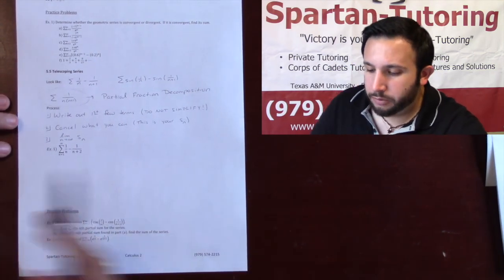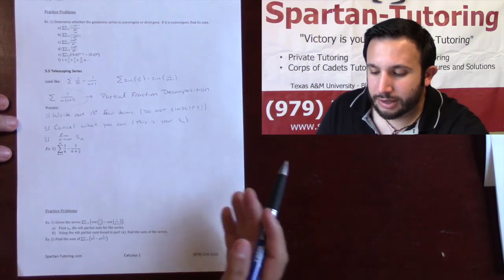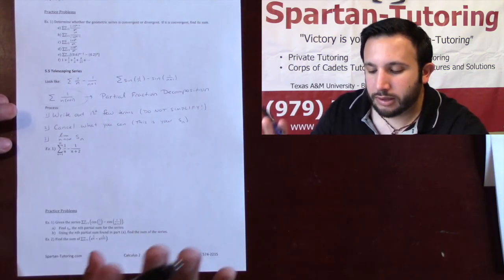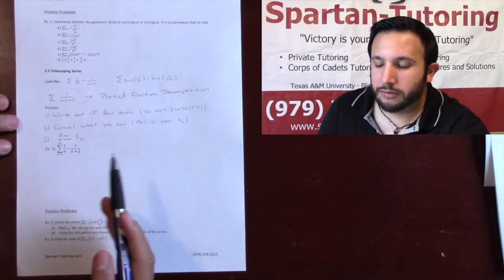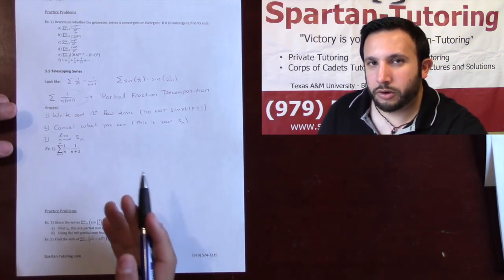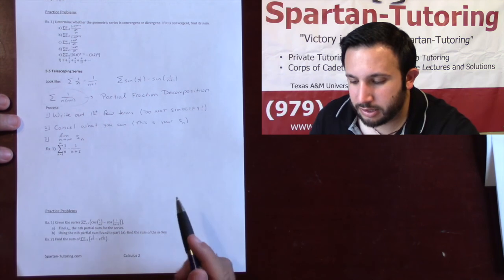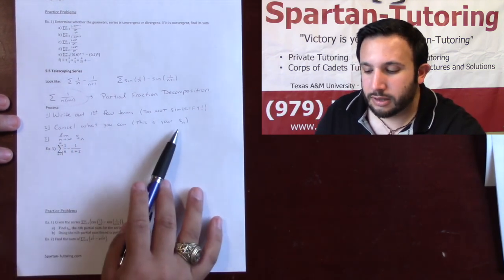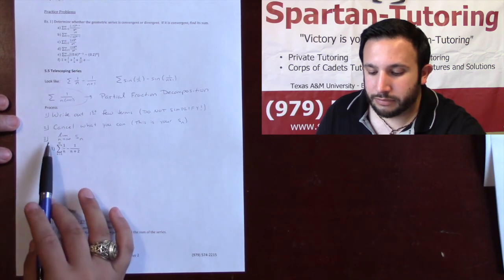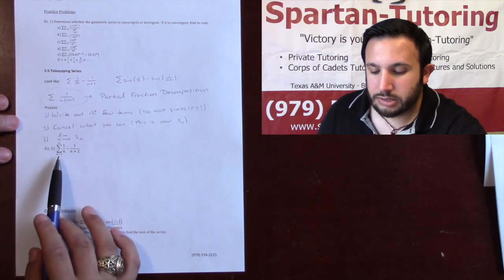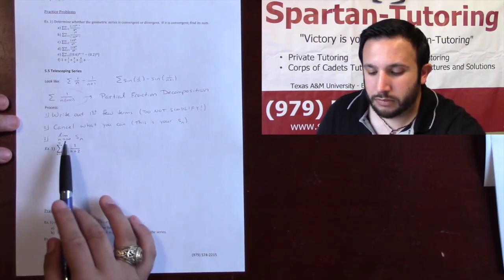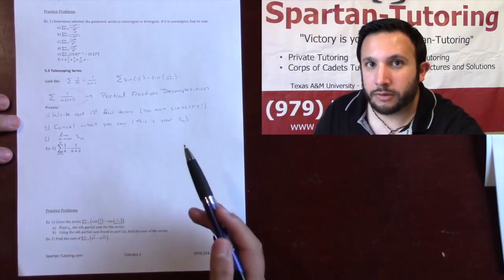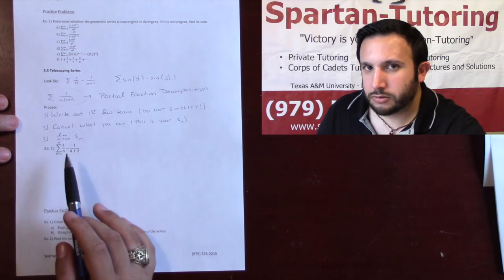I'll show you what I mean by that, but write out the first few terms and do not simplify. Once you do that, cancel what you can. What this leaves you with is your partial sum. If you remember the partial sum video, your S_n is like S_3 which is a_1, a_2, and a_3. So if they ask you to find the partial sum of this telescoping series, whatever you have left over after cancellations, that's your partial sum. The last thing you want to do is if you want to find the infinite sum, then just take the limit as n goes to infinity of whatever you have left over.